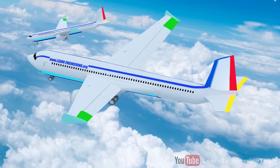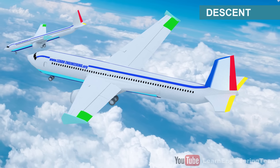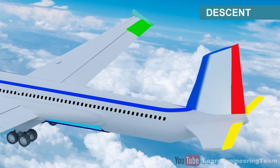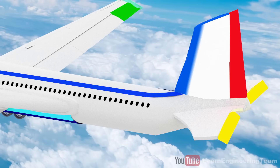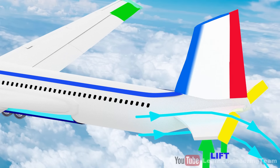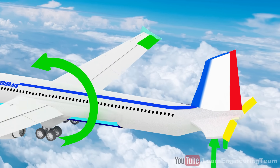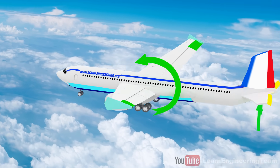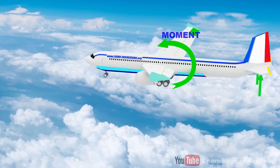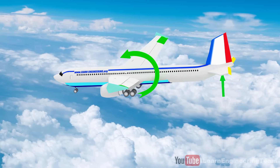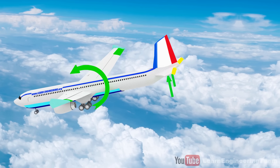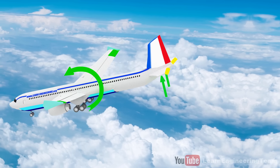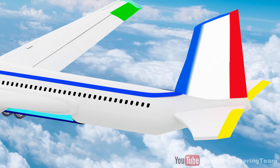Assume you want to descend the airplane — you can just lower the elevator. This will deflect the flow as shown and will produce a lift force. That lift force will create a moment that makes the nose of the plane go down. If you want to climb up, just do the reverse.